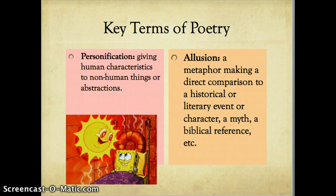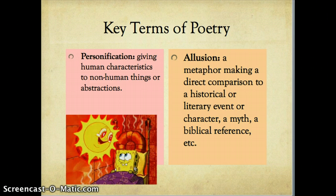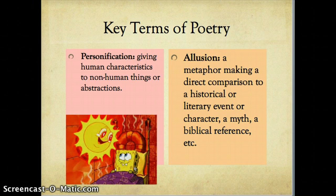Continuing on with our discussion of poetic key terms, we can think about personification, which is the giving of human characteristics to non-human things or abstractions. We find this a lot in Rhyme of the Ancient Mariner by Samuel Taylor Coleridge, where elements of nature — the sun, the moon, other forces of nature — are given human characteristics. We see an example here, a funny example from SpongeBob, where the sun is clearly a personification — it's given human characteristics.